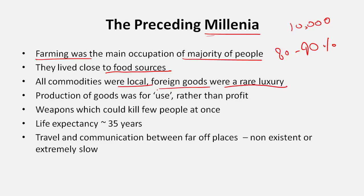Before the Industrial Revolution, all commodities produced were local. Foreign goods were a rare luxury — there was a 99% chance that anything in your home was made locally in the same village. Getting goods from foreign lands was a rare luxury only kings could afford. For example, Persian carpets took two to three months to reach from Persia to India and were extremely costly.